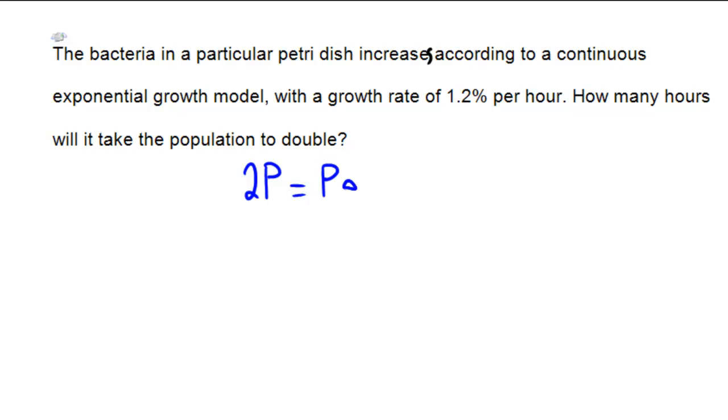E to the r, for r we're going to use 0.012 because it has 1.2% but we're going to put that as a decimal, it's 0.012 times t. And then we're going to start to do some work. Divide the p off of both sides so that way we have 2 equals e to the 0.012 times t. Let's take an ln of both sides, so we have ln of 2 equals 0.012 times t.